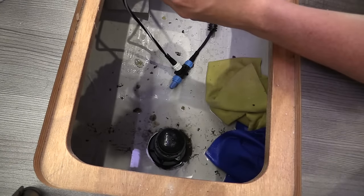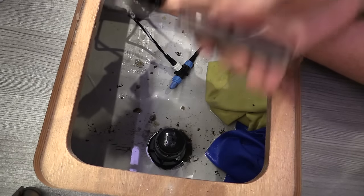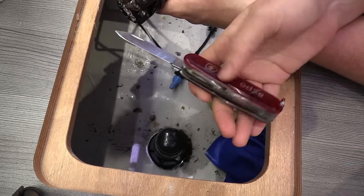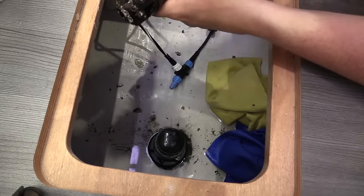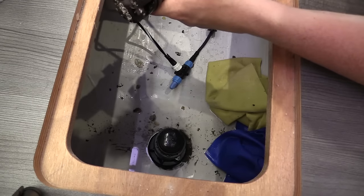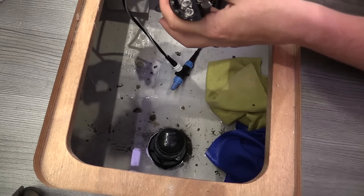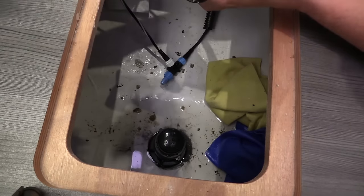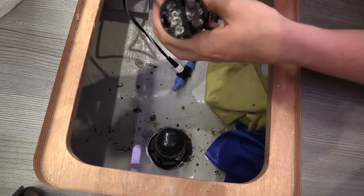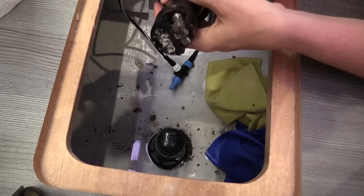I also added two tools to this project. I used my pocket knife to help get hard stuff off the paddle wheel and the area around it. I also used paper towels to get slimy stuff off the transducer.